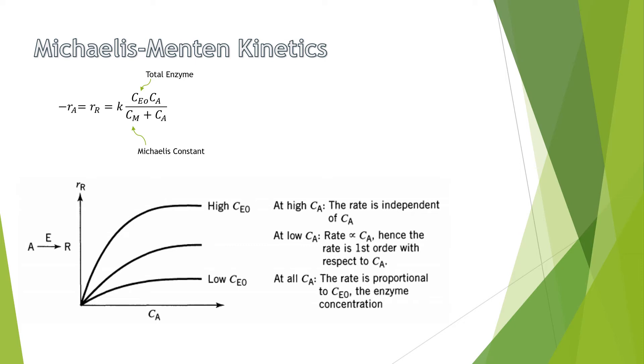Based on the graph shown, one can understand that at high enzyme concentrations, the rate would be independent of Ca, whereas rate would be first order with respect to Ca at low concentration. Anything in between would represent a proportionality to the enzyme concentration.